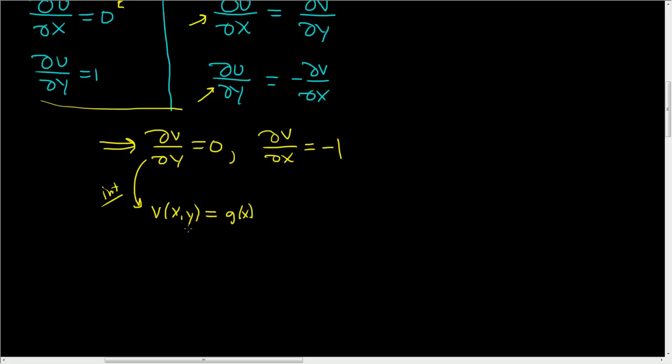And then now we have to use this other equation here, this other derivative. So we'll take the partial of v with respect to x. That's equal to g'(x). And then we'll set it equal to what we have here. So this is equal to negative 1.